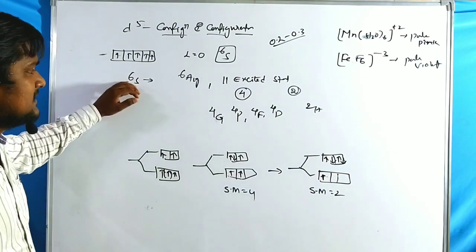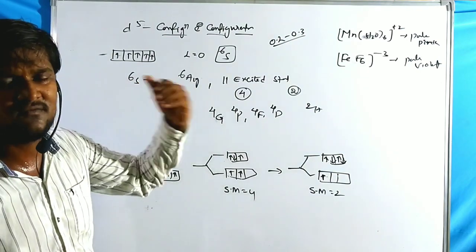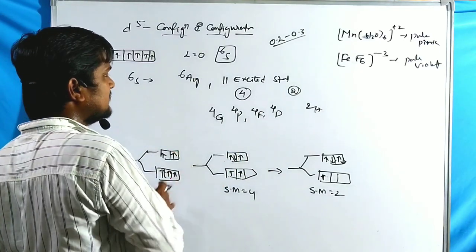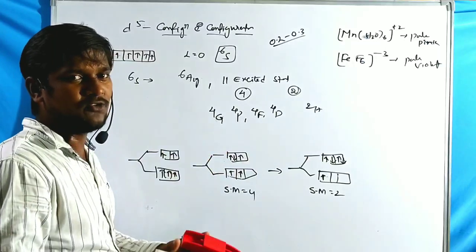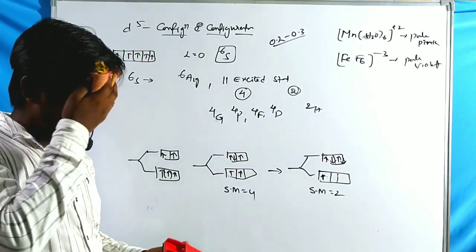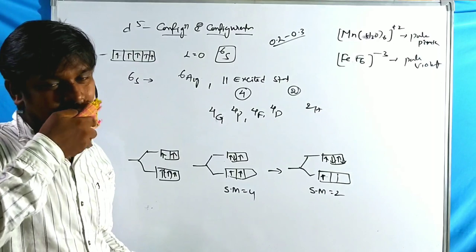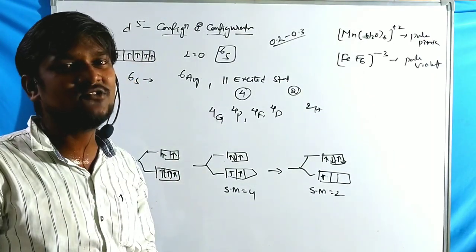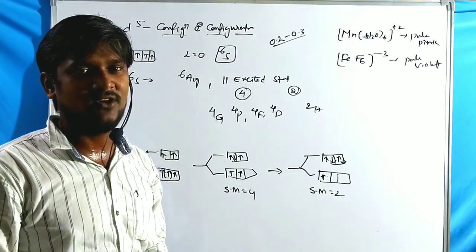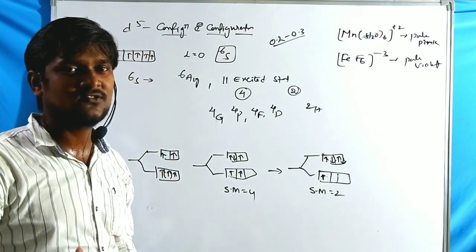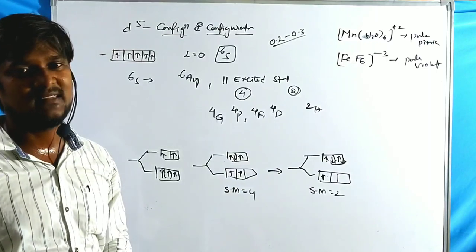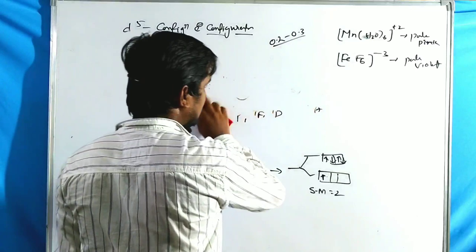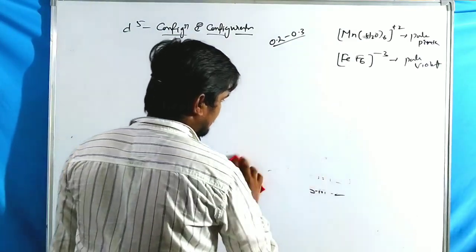Other than spin multiplicity 6, no other configuration will have spin multiplicity 6. A ⁶→⁶ transition is spin-allowed. A ⁶→⁴ transition may be possible, but ⁶→²  has a very large difference and gives negligible intensity. These transitions are explained by the d⁵ electronic diagram.